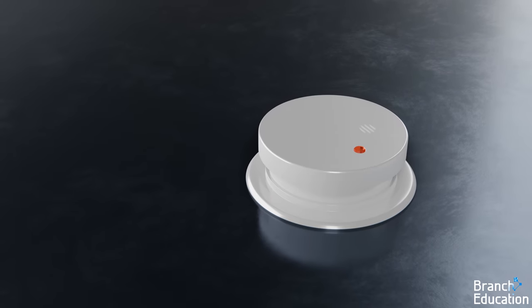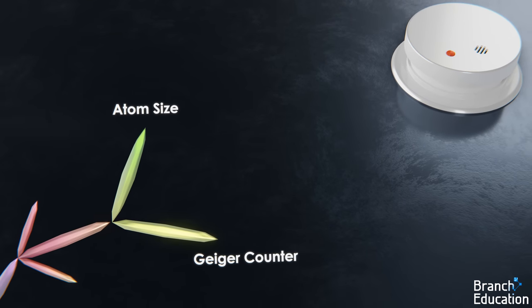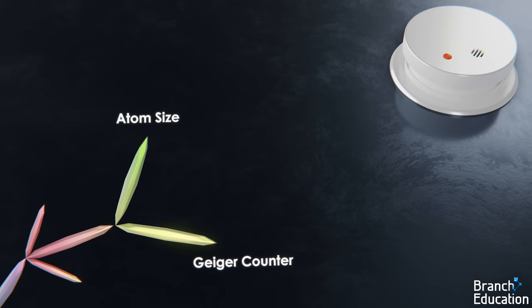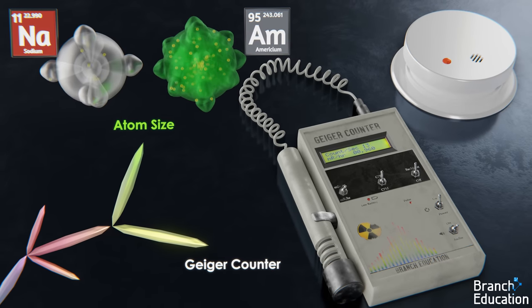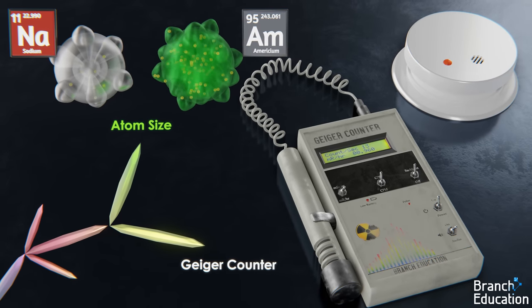Also, stick around until the end where we'll discuss two related topics or branches: how Geiger counters work, and why atoms with high atomic numbers are counter-intuitively small.